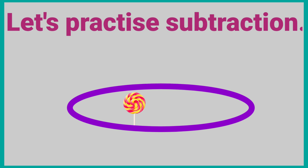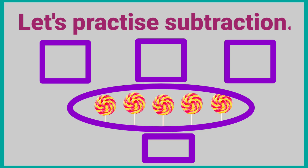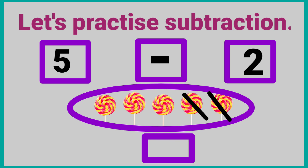Let's practice subtraction. These are five lollipops. Ram ate two lollipops. How many lollipops are remaining? That means five minus two is equal to three. Three lollipops are remaining.